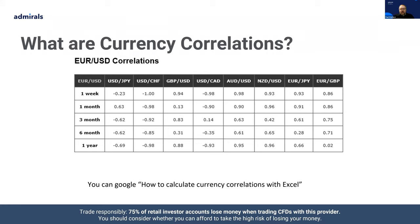Here's an example of correlations regarding the euro against the US dollar — what they're like over one week, one month, three months, six months, and a year against other currency pairs. The euro/US dollar over one week against the dollar/Swiss franc has an almost perfect negative correlation of minus one. So as the euro/US dollar goes up, the dollar/Swiss franc goes down. The US dollar against CAD also has an almost perfect negative correlation, while the Aussie dollar has an almost plus one correlation, and the Kiwi dollar is at 0.93 — still a strong correlation. The dollar/Swiss franc shows a pretty strong constant negative correlation when you look at it over one month, three months, six months, and a year.